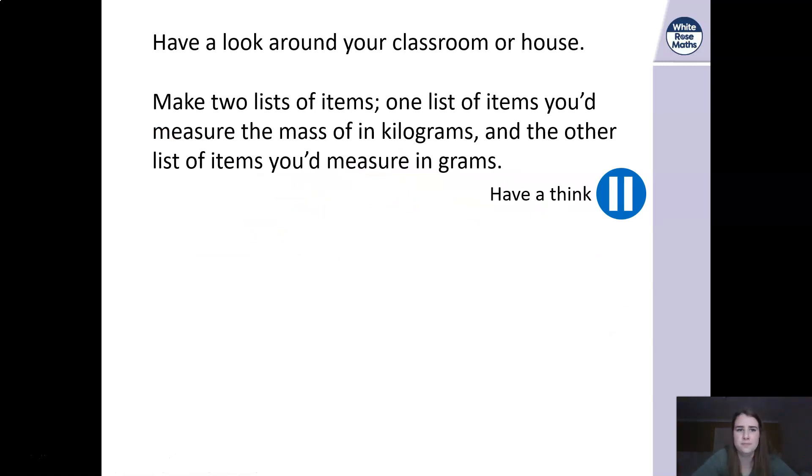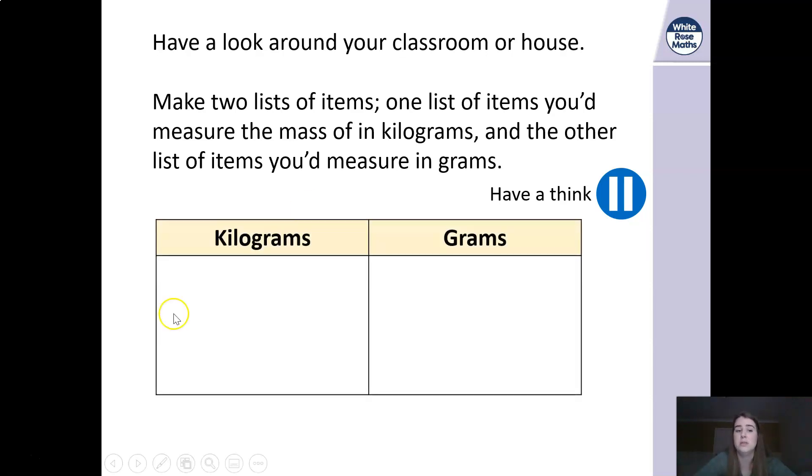Well done if you were able to get those right. Had these been bigger I might have then converted them up so that the rest of them were kilograms, but because they're all relatively low numbers it's easy to convert them to that smaller measurement. So your challenge now, I want you to have a look around your house wherever you are and I want you to make a list of two lists of items: one list of items that you'd measure the mass of in kilograms, so you'd need bigger measurements, and the other list of items you'd measure in grams for anything that might have a small measurement on it.